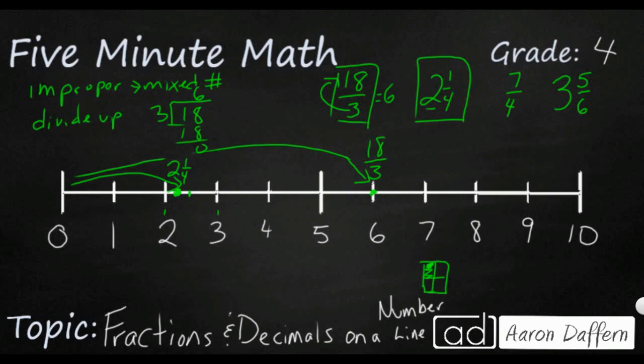Now 7 fourths is another improper fraction. So we're going to do that same thing we did last time. We are going to divide up. So 4 is our denominator. We're going to divide that into our numerator of 7. That's going to go in one time. But now we have a remainder.